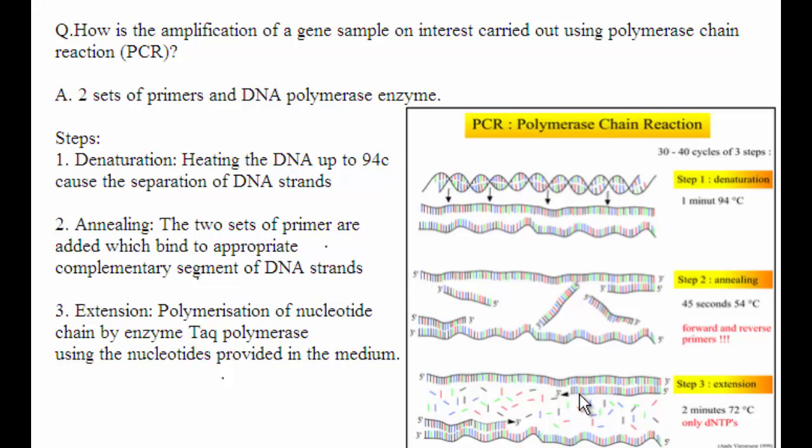After adding these primers, you can see the forward and reverse primers. They synthesize in this direction. Here, polymerization of nucleotide chains by the enzyme Taq polymerase using the nucleotides provided in the medium. These are the steps that are involved in PCR.